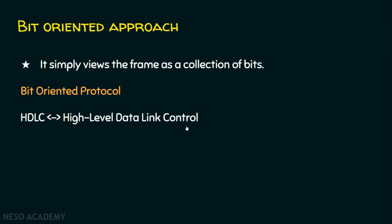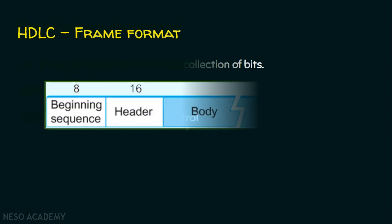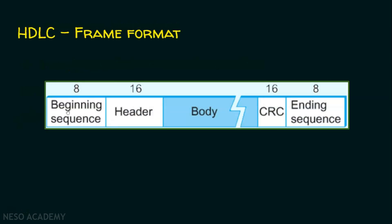We know the frame format of HDLC. We have a beginning sequence which is 8 bits, a header which is 16 bits, a variable length body, followed by the CRC — the Cyclic Redundancy Check of 16 bits — and finally the ending sequence of 8 bits. This beginning sequence and ending sequence are both 8 bits and they are one and the same.